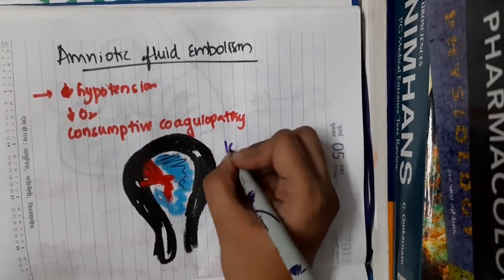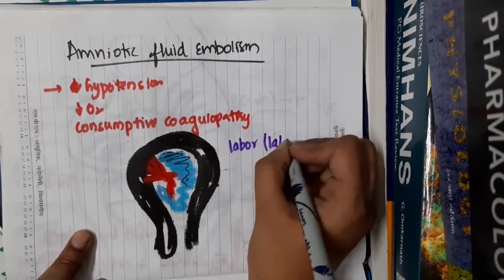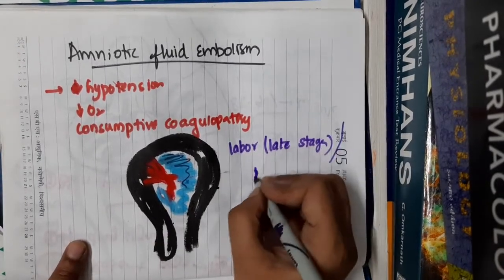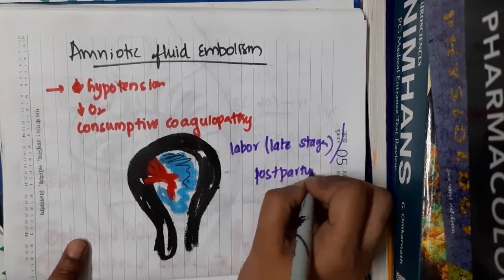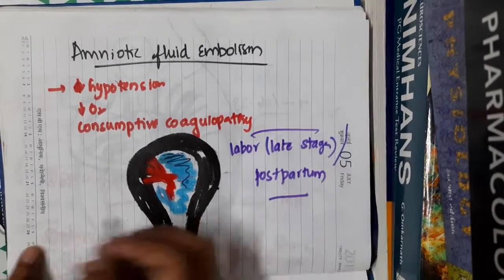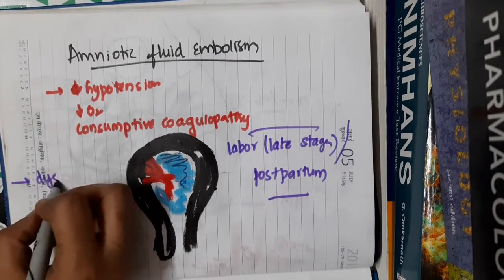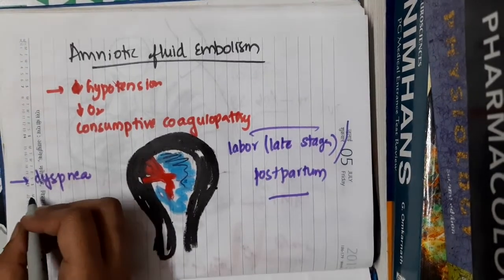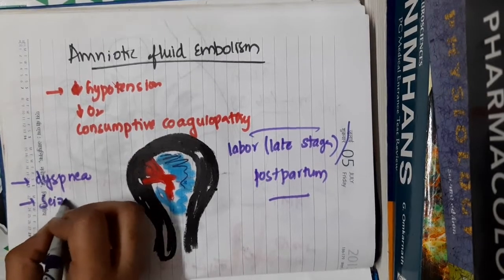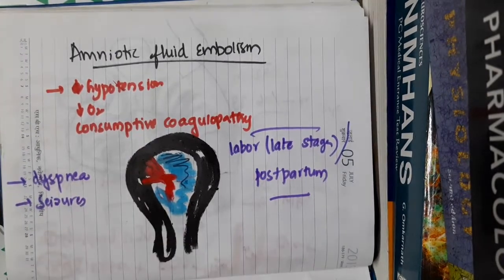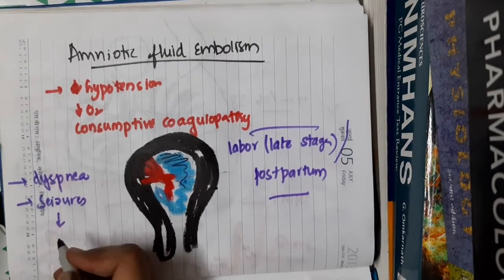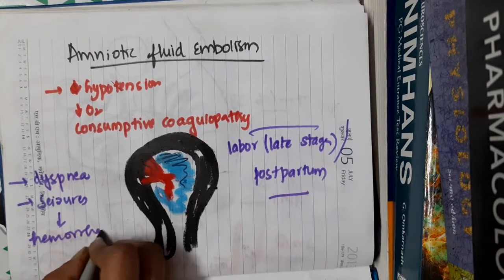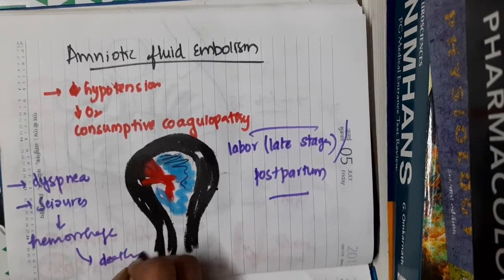This is most common during the late stages of labor or immediately postpartum. The patient suddenly develops dyspnea with severe respiratory distress and can have seizures. Followed by seizures, there will be massive hemorrhage, and within a few minutes or few hours, the patient dies.